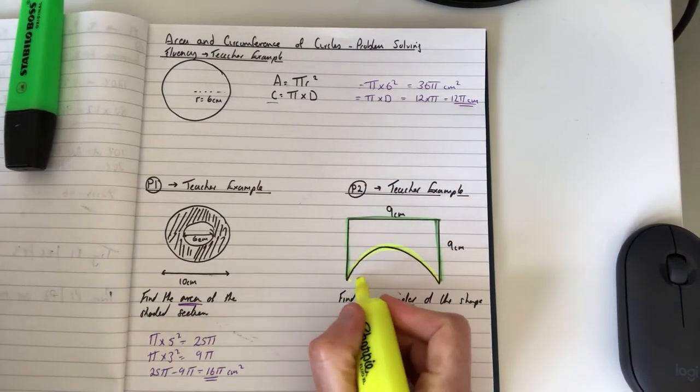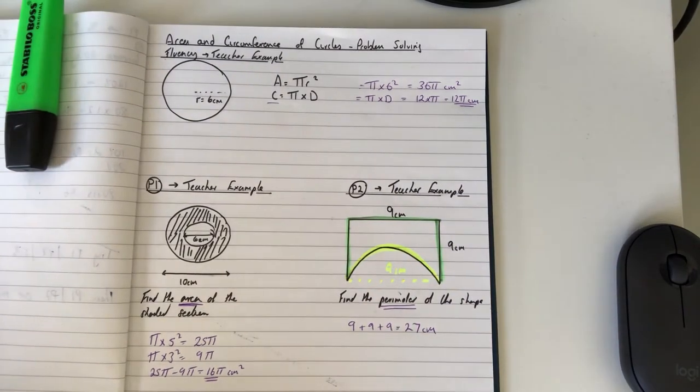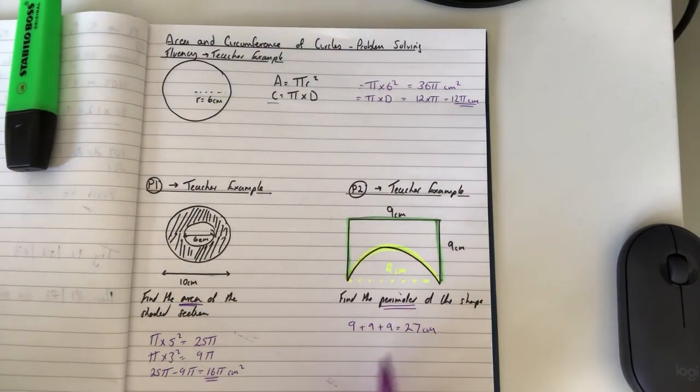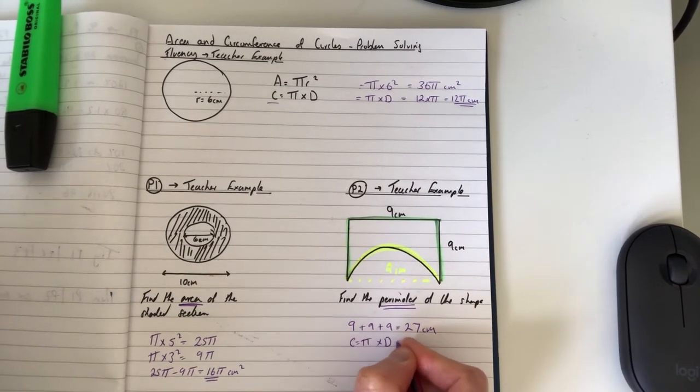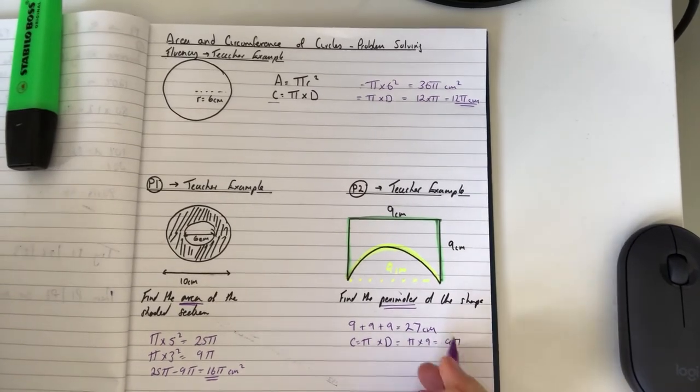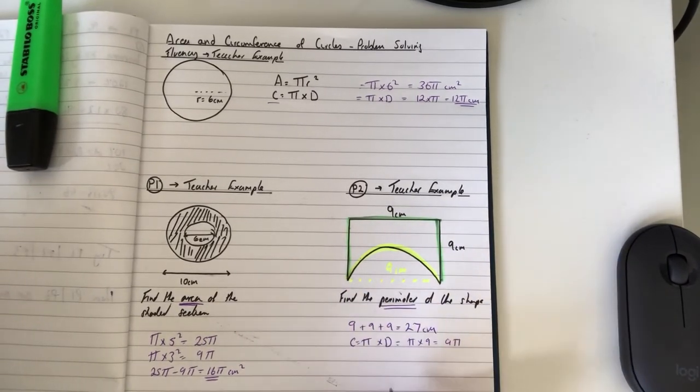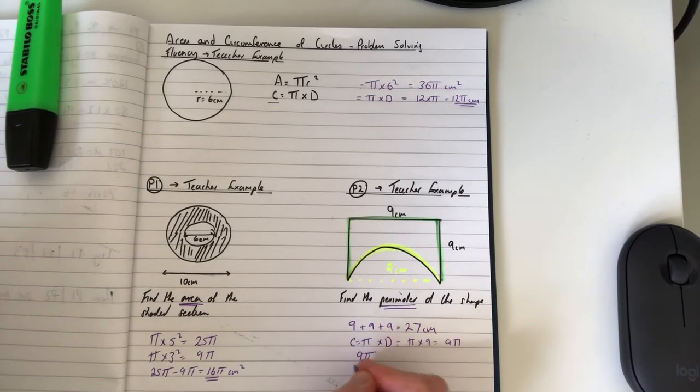Now we've also got this section here which is a semicircle. The semicircle has a diameter of 9 centimeters. If I'm working out the perimeter of just that yellow bit, circumference equals π times diameter, which is π times 9.